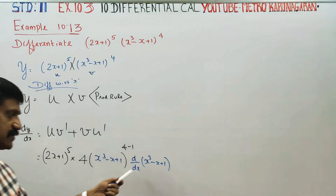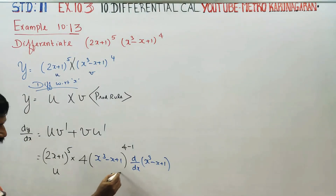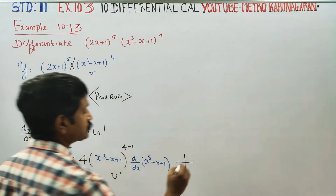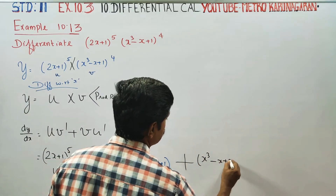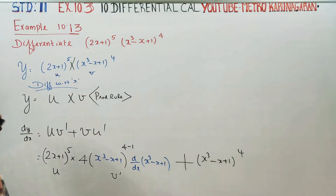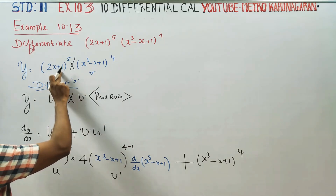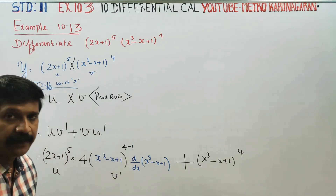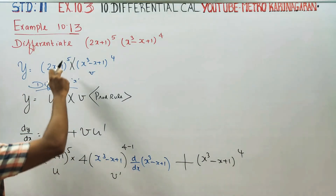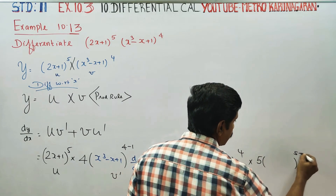This is my u, and this is my v prime. Plus v — that is (x cube minus x plus 1) whole power 4 — times u dash. Now differentiate: the power is 5, so we bring down the power 5.